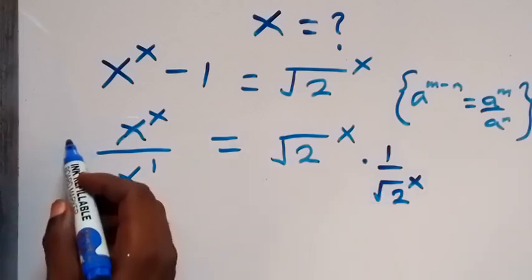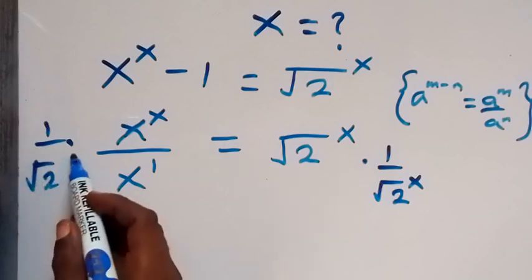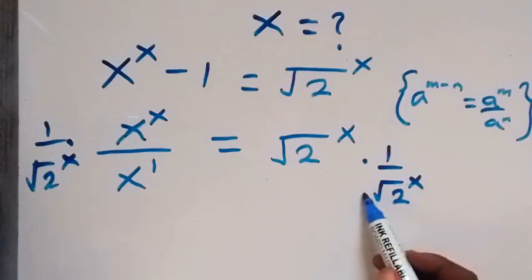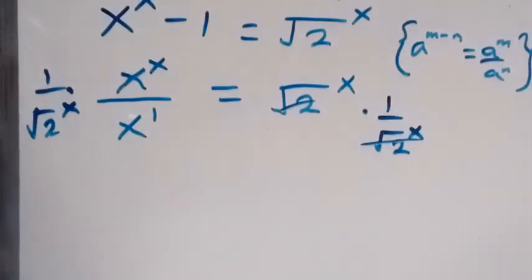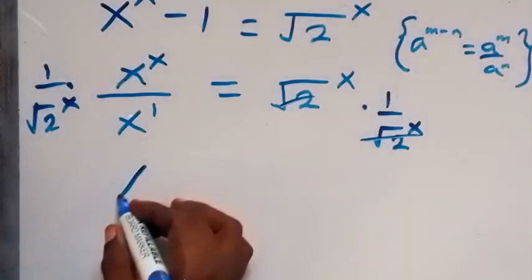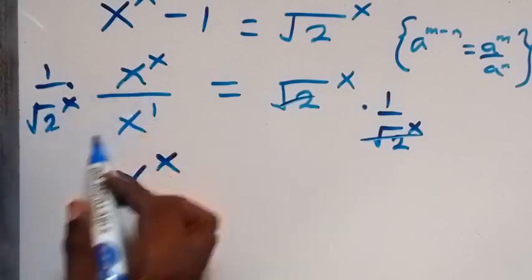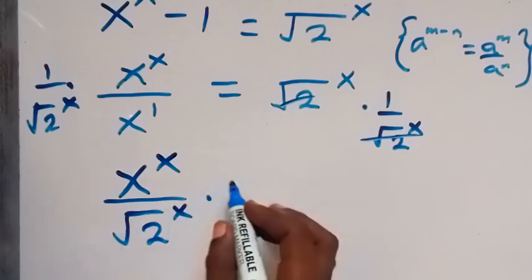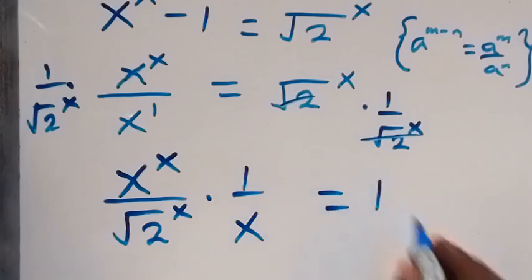We also multiply this side by 1 over root 2 raised to power x — whatever we do to one side we do to the other. This cancels out, and on this side we can separately write it as x raised to power x over root 2 raised to power x, times 1 over x raised to power 1, which equals 1 on the right hand side.